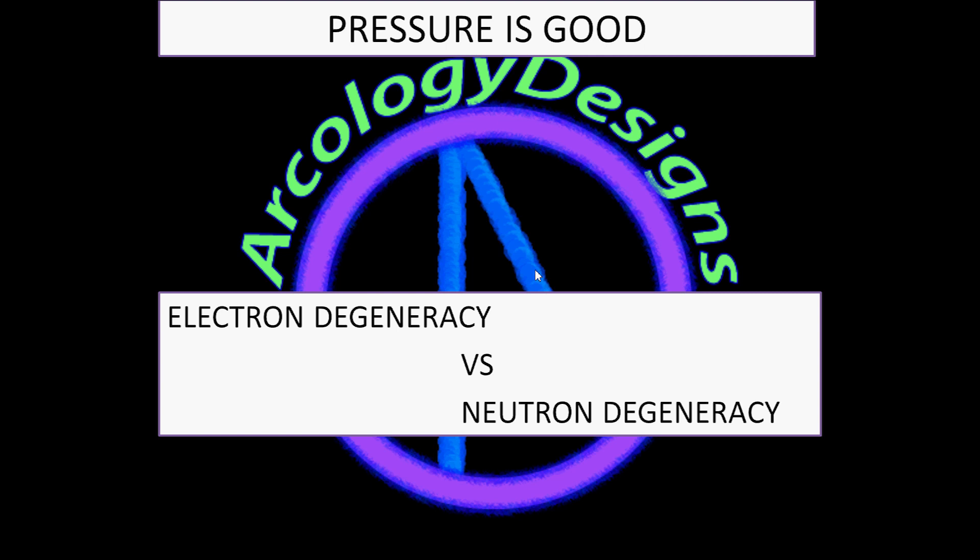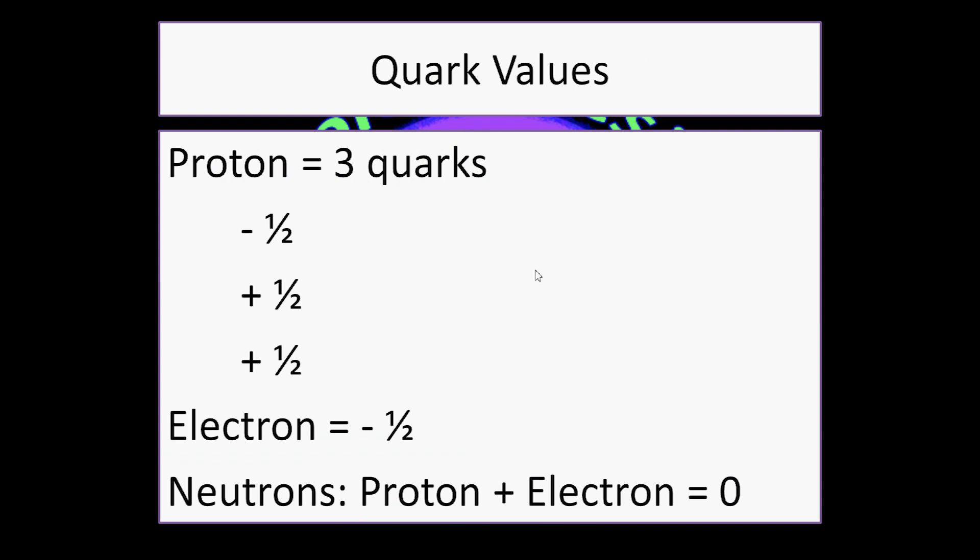This spin can be either positive or negative. So how do we get a proton? We have three quarks in a proton — two of them with a spin of positive one-half and one with a spin of minus one-half. So the end result is plus one minus 0.5, leaving a positive half-spin value behind, making protons positive.